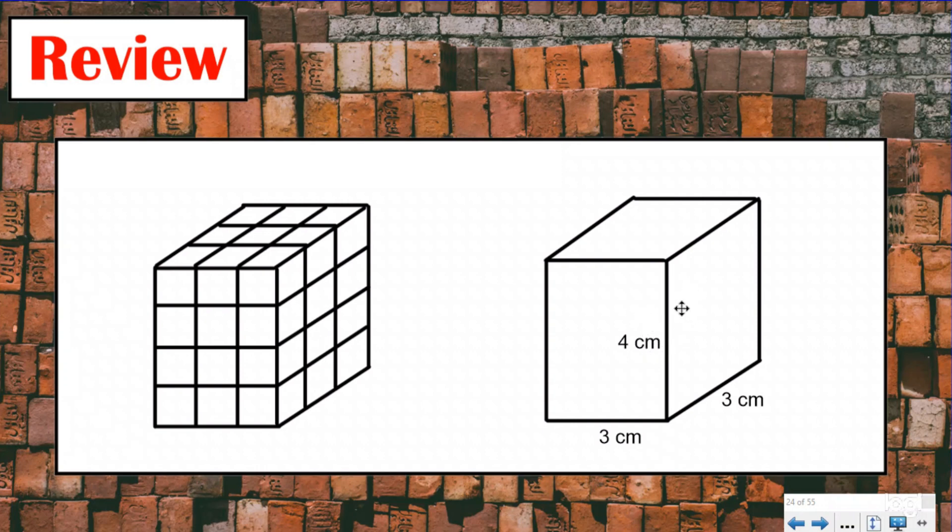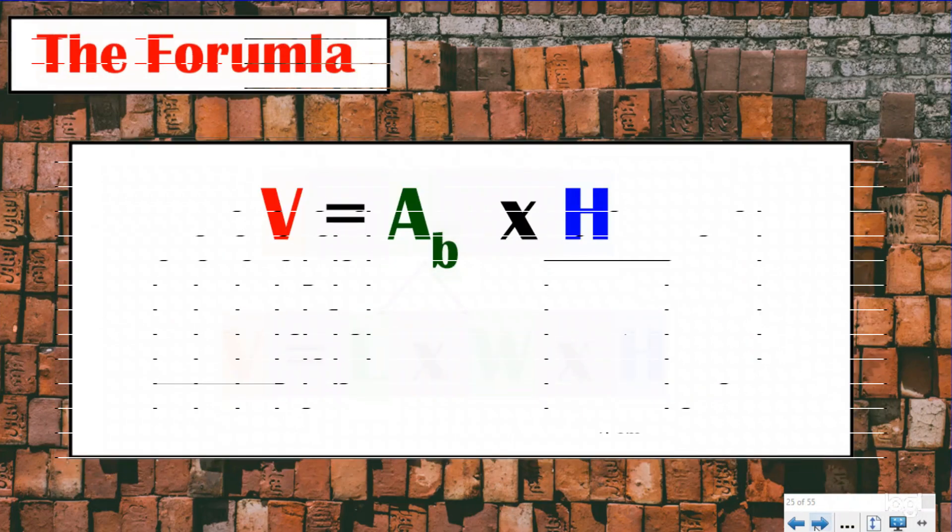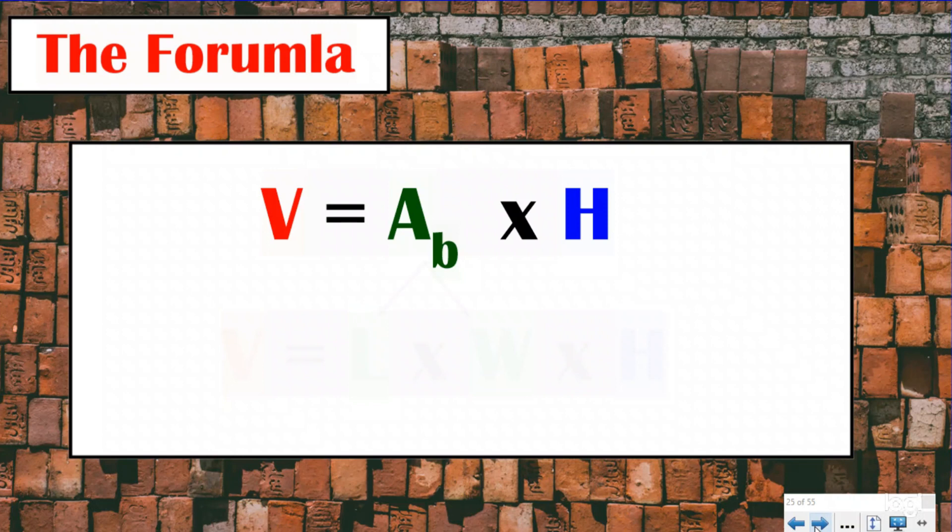We're still finding the volume. It's still the exact same thing, except our rectangular prisms are going to look like this today. Our formula for volume is going to be the exact same thing. We're still going to be finding the area of the base and then multiplying it by how many layers we have.